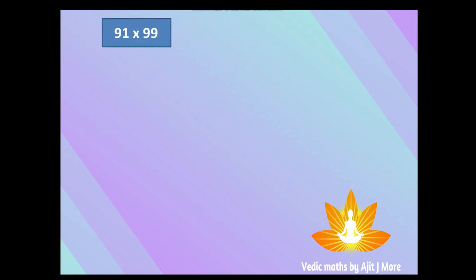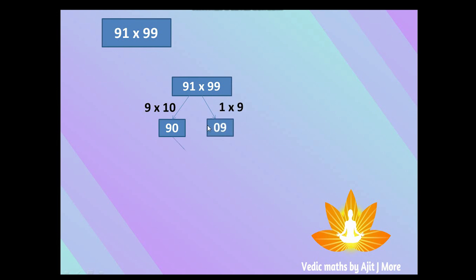One more for practice: let's multiply 91 × 99. Does it satisfy the criteria? Yes — 1 + 9 = 10 and the remaining digits are the same. What will be the first part? What comes before the unit place? That is 9. And what comes after 9? That is 10. Multiply 9 × 10 = 90 — that is the first part. The second part is 1 × 9 = 9. Always remember the second part has to be two digits, so if the answer is one digit, prepend a zero — that is 09.